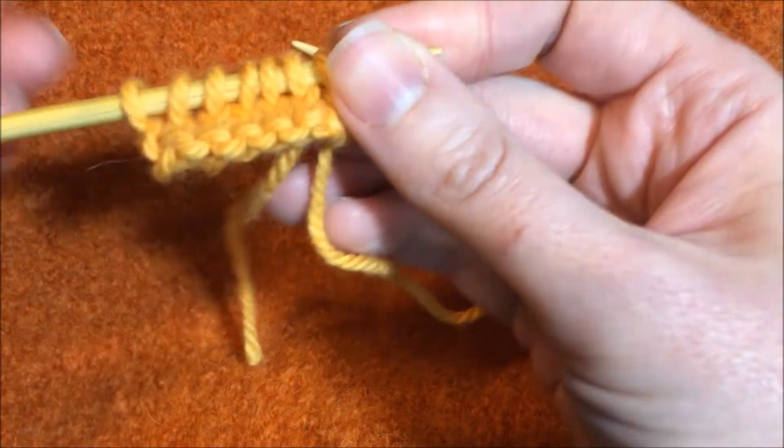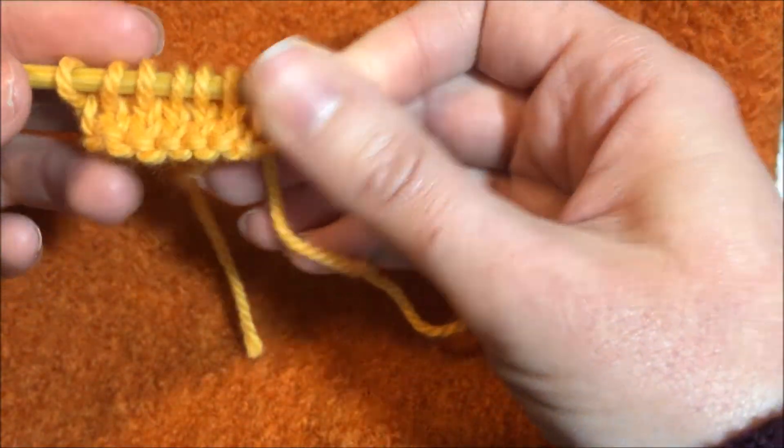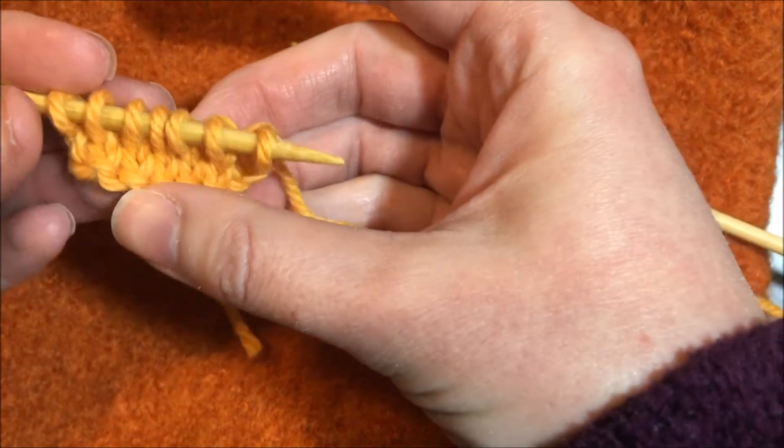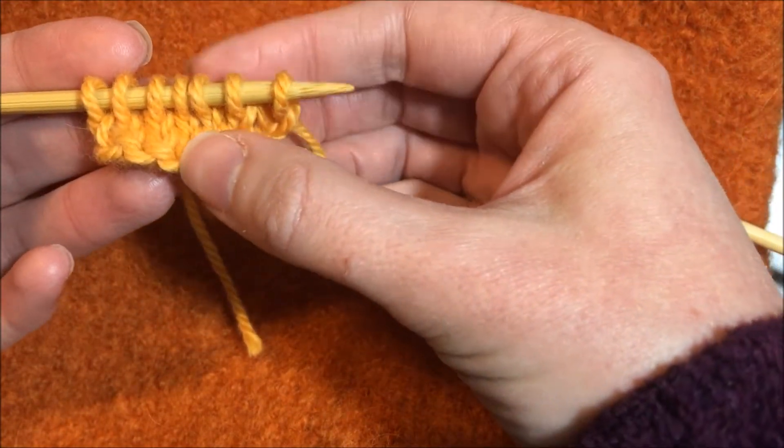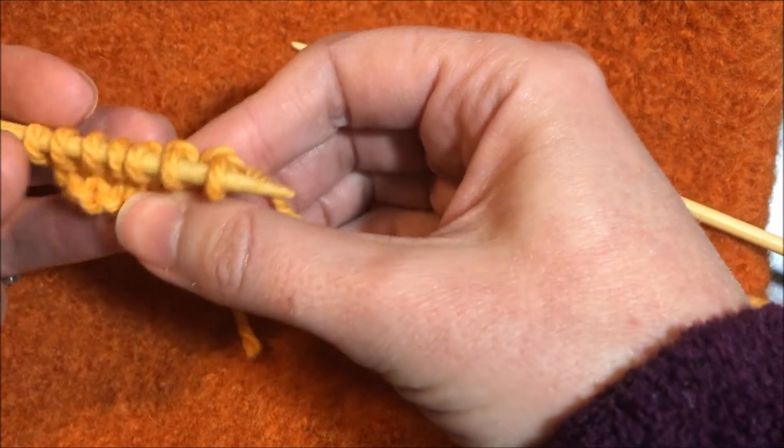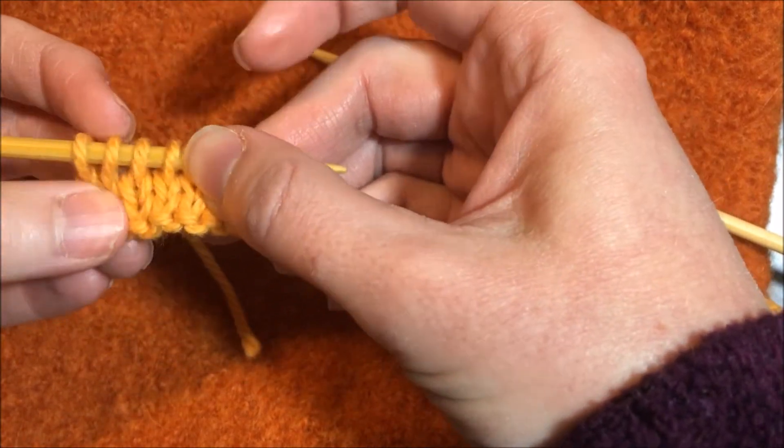So there you have a row of knit in the regular way from the left hand needle to the right hand needle, and a row knit backwards. And you can see that they look the same. The stitches aren't twisted.